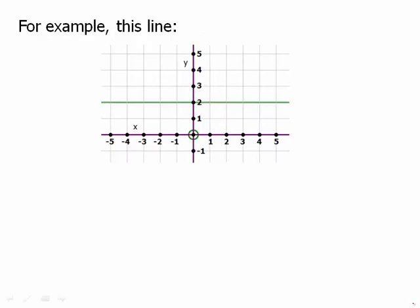For example, this line here, every single point has a y-coordinate of 2, and it crosses the y-axis at 2. So, it must have the equation y = 2.